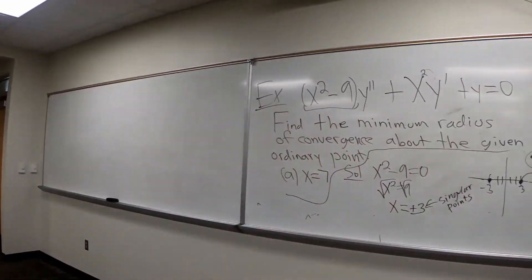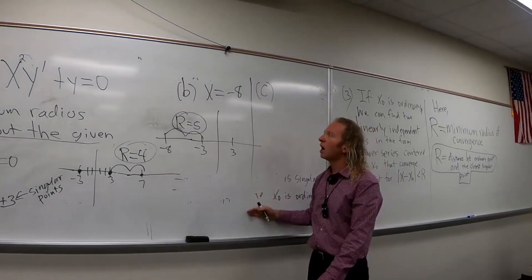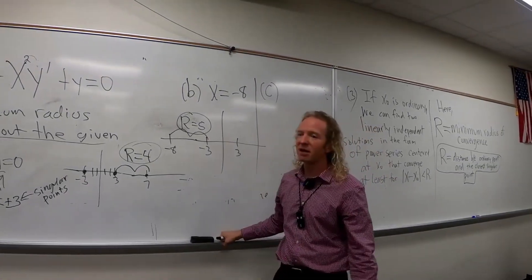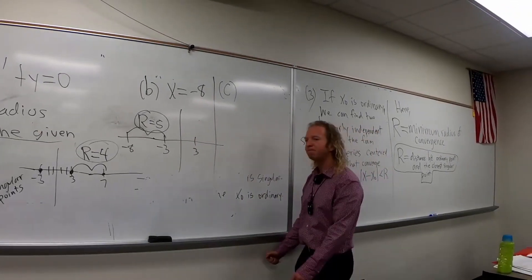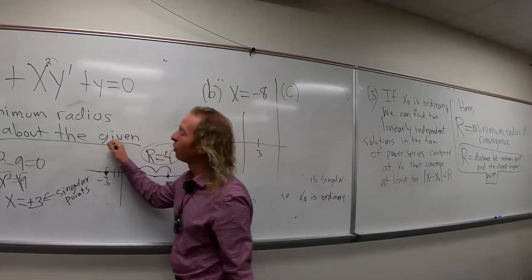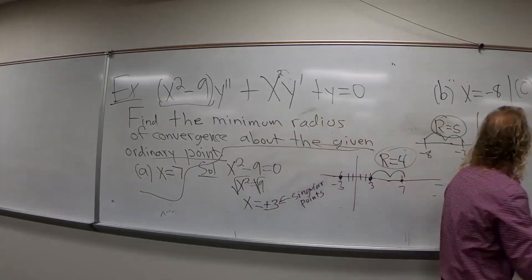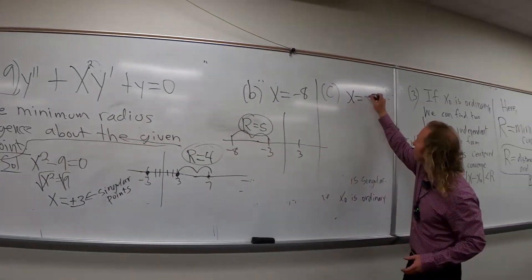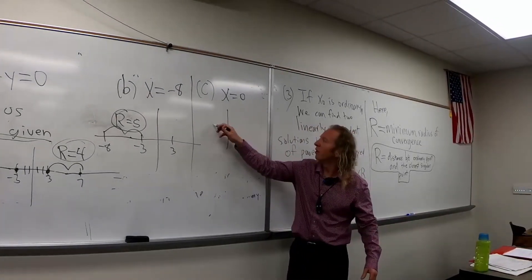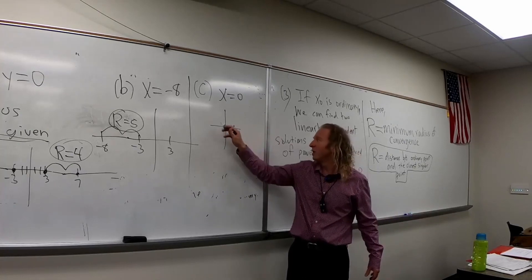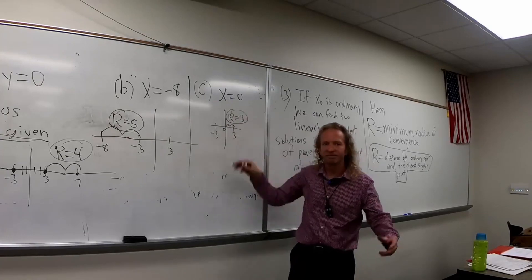One more. Part C. What if x naught is negative eight? X naught would be negative eight — that's the ordinary point. You're just finding the distance from the ordinary point to the closest singular point. What if it was zero? If it's zero, you have a tie, but who cares — it's three both ways. Here's three, here's negative three. So it's just three.